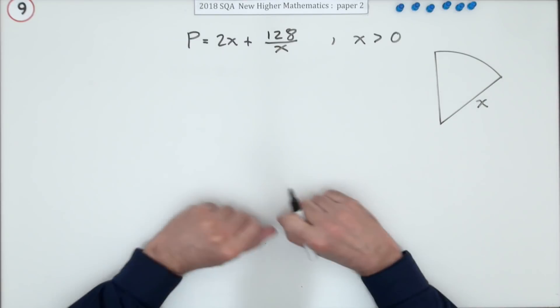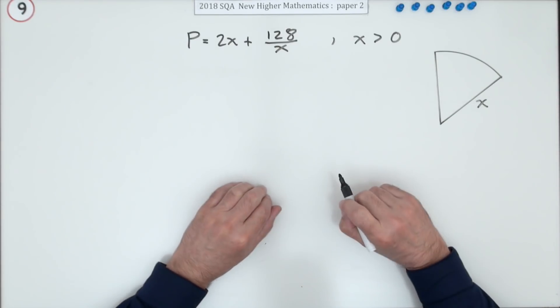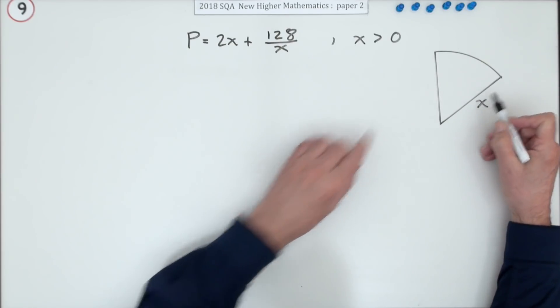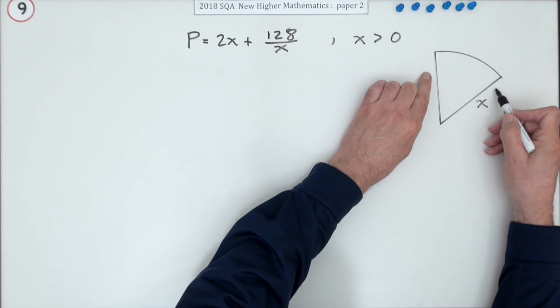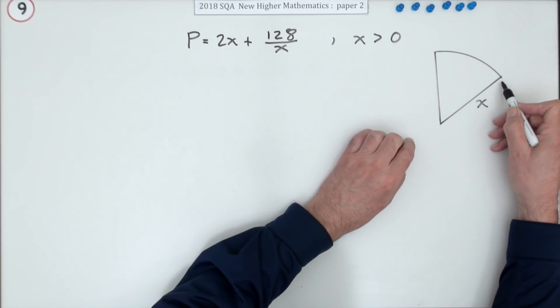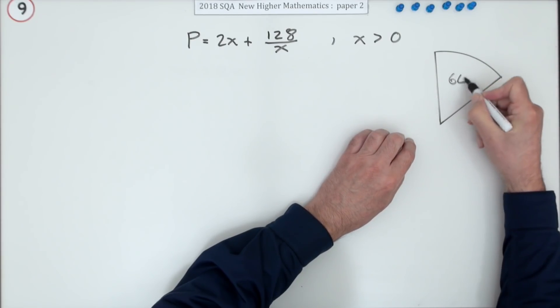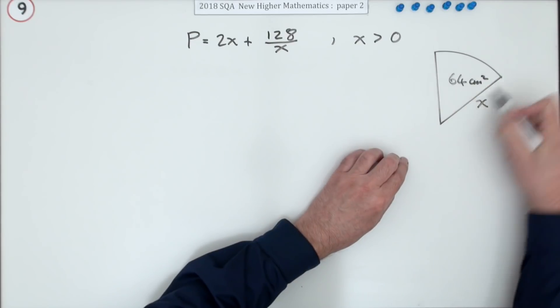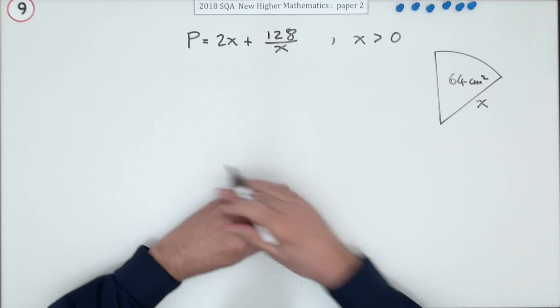So what could part A have been, if they'd asked you? And I don't see why they didn't, because it is quite straightforward. Well, it would have been this. You've got a sector of a circle of radius x. Its area is 64 centimetres squared. Show that the perimeter of that sector is given by this expression.